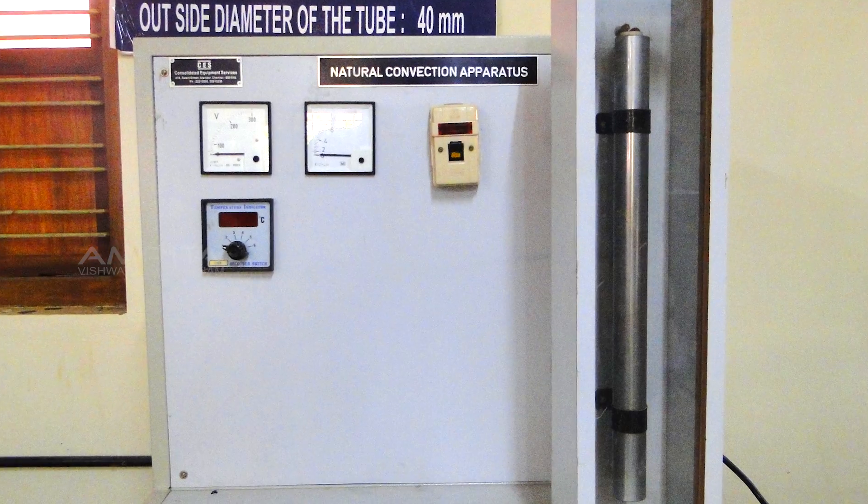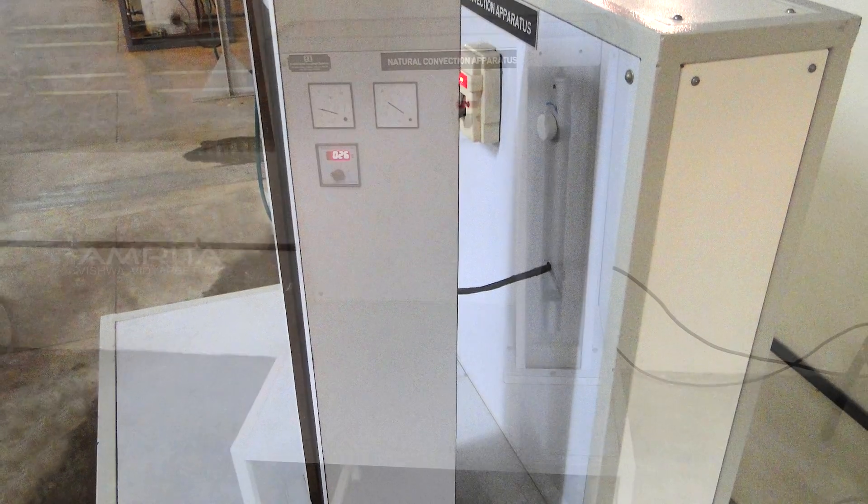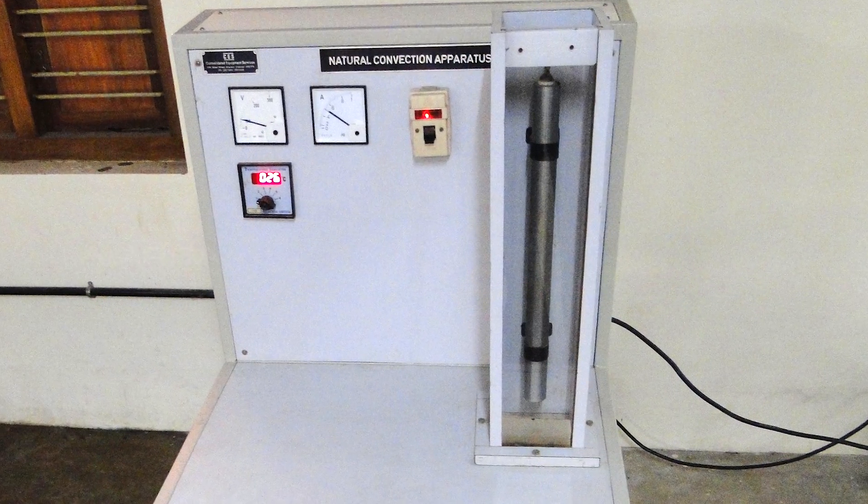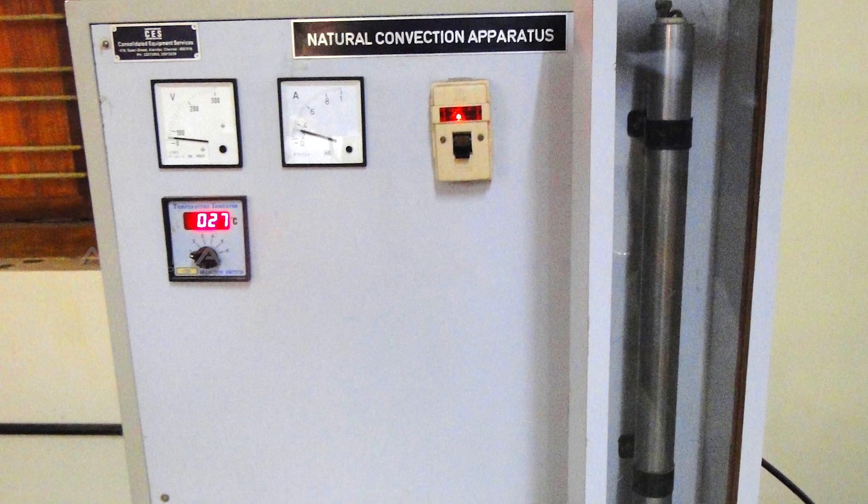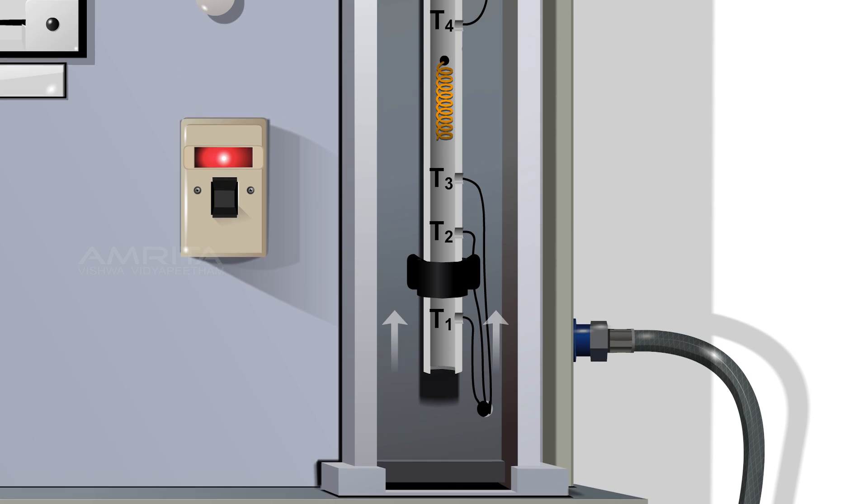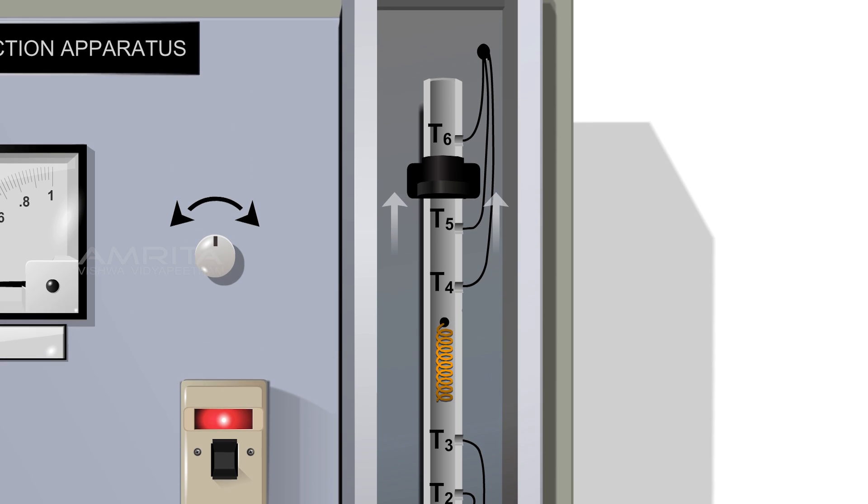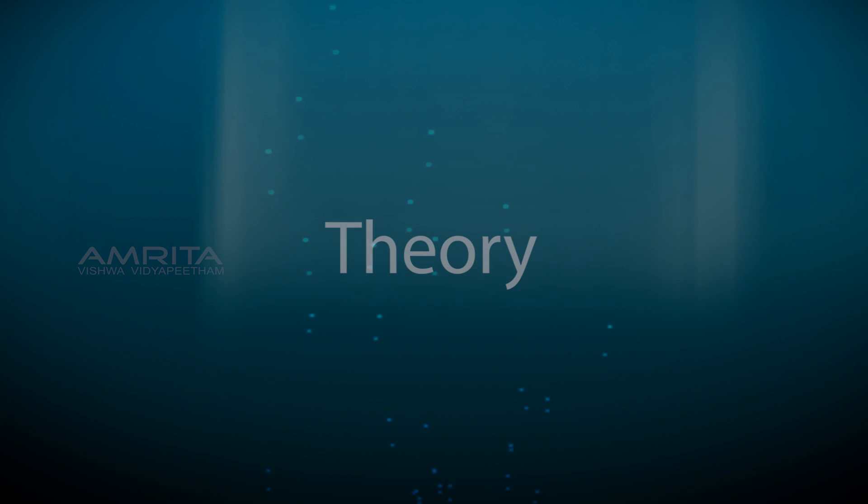Heat is lost from the tube to the surrounding air by natural convection. Air around the tube gets heated and becomes less dense, causing it to rise. This in turn allows the continuous flow of air upward in the duct. The temperature at various locations on the surface of the vertical tube is measured using thermocouples.